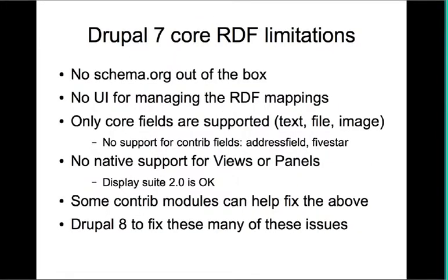Core has some limitations worth knowing. Because Drupal 7 was released six months before Schema.org, there are no Schema.org mappings out of the box, though this is planned to be fixed for Drupal 8. There's also no UI for setting mappings in core, only core fields are supported out of the box, complex contrib fields like address fields are not yet supported, and there's no native support for views and panels, though DisplaySuite 2.0 is known to work. Many of these issues can be fixed by downloading contrib modules.